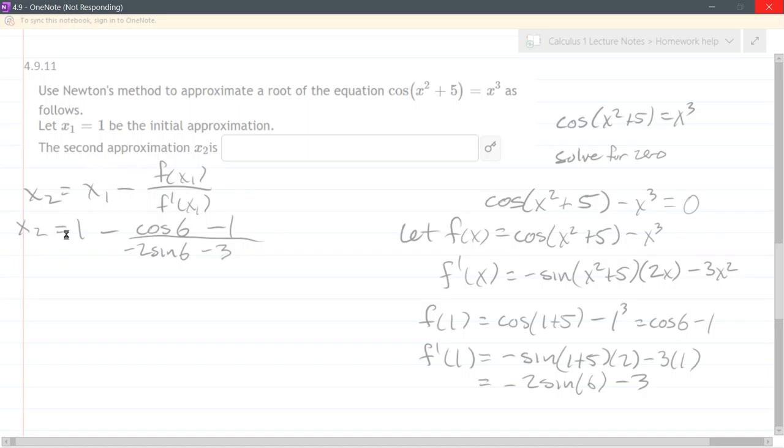This one only asked for x2. If I needed an x3, I would go back up and redo this formula here, except I would increase all these subscripts by 1.